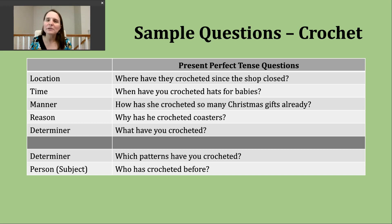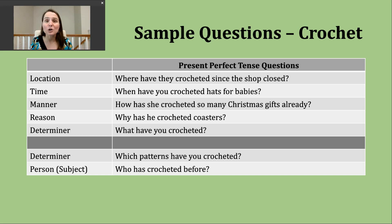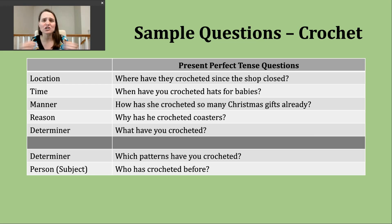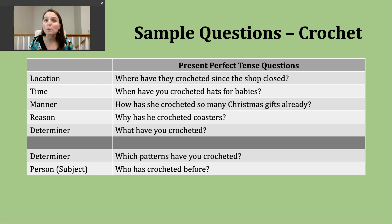The last type of question that doesn't really follow our pattern is a question about the subject — the person who is responsible for an action. We use the question word who, but who also serves as our subject. So our pattern here will be: who has, and then the participle form of our verb. You can see that in the example: "Who has crocheted before?" — maybe we're in a class or getting some type of instruction and the teacher asks this question to the people attending. I always like to note that our question word who is singular, even though our answer might result in two or more people. And that can be helpful in other verb tenses, not just the present perfect.